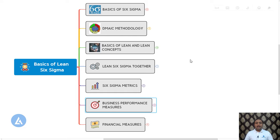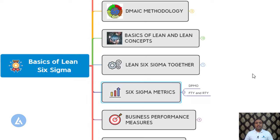Welcome back. After understanding various terms related to basics of lean and six sigma, in this video we are going to see two important metrics in six sigma. The first one is DPMO, that is Defects Per Million Opportunities, and the second one is FTY and RTY — First Time Yield and Roll Throughput Yield. So let's begin.